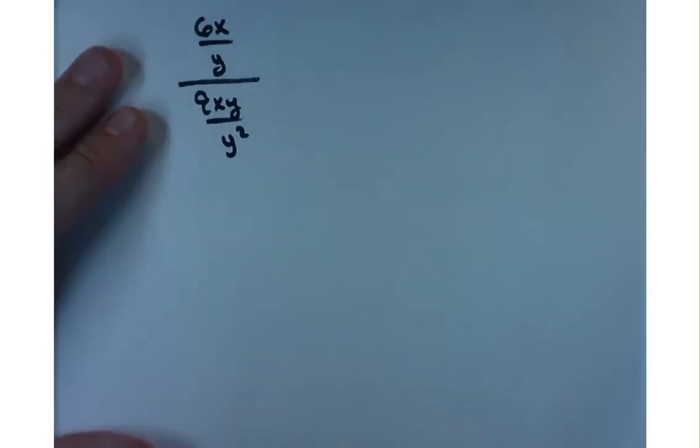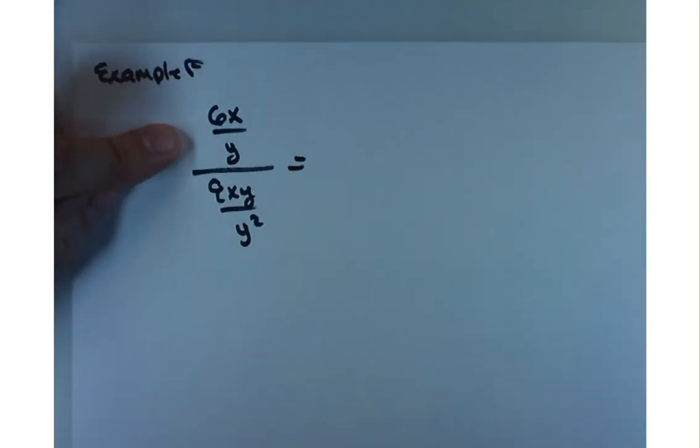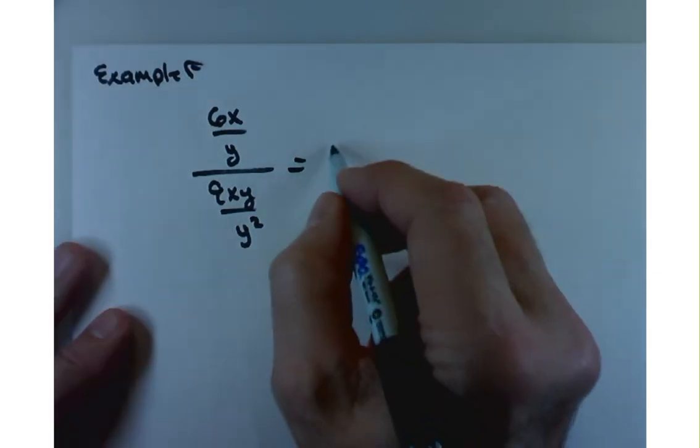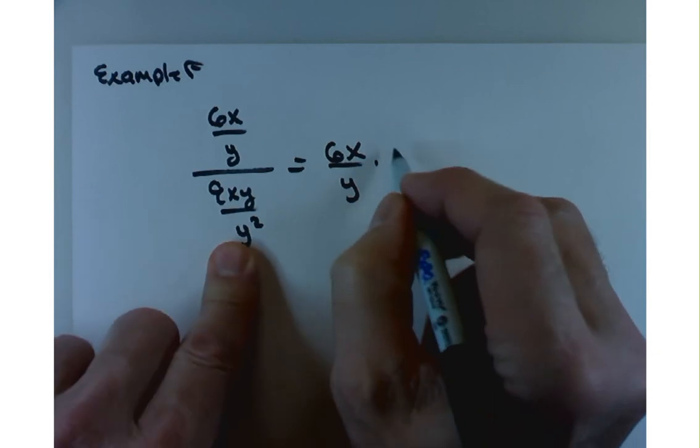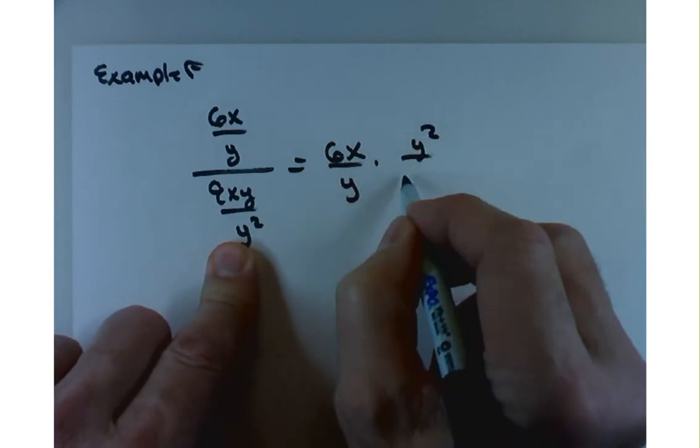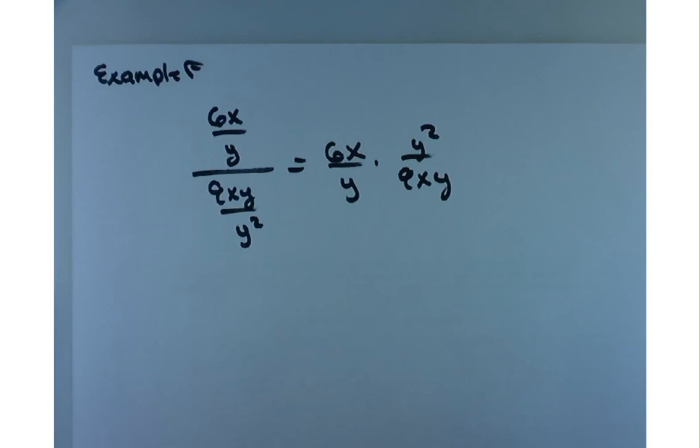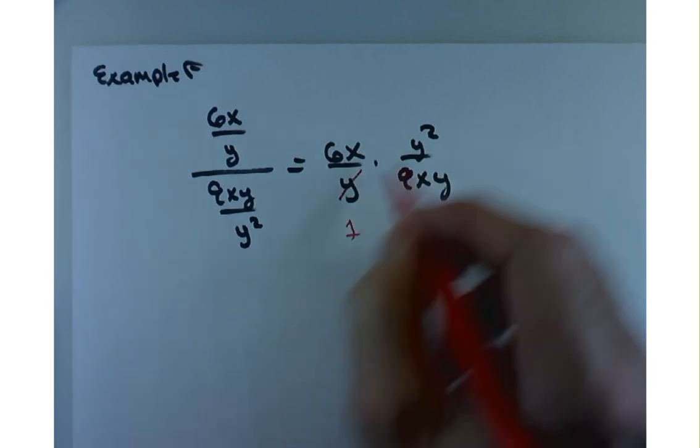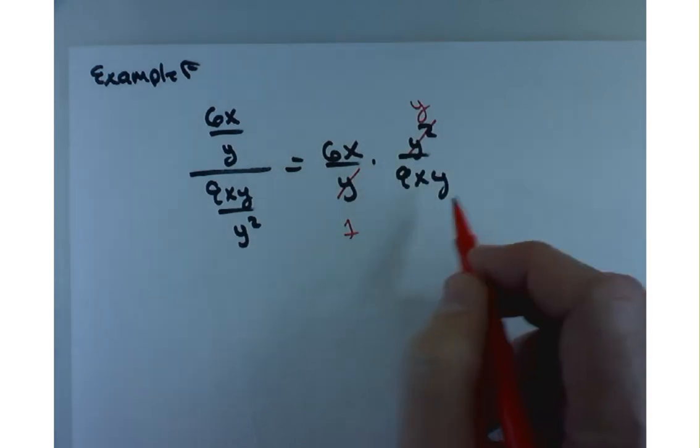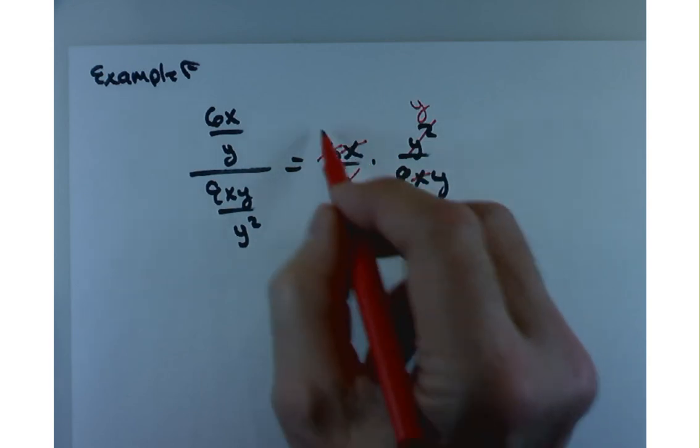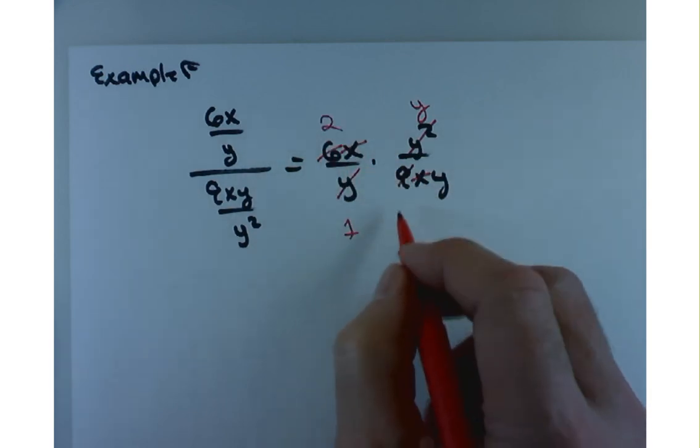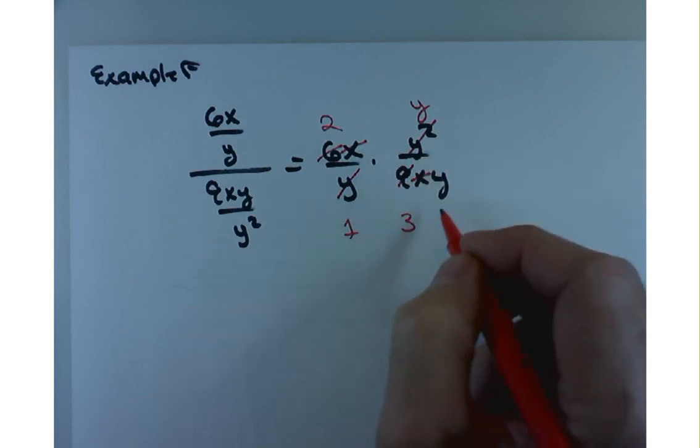So, last one. Kind of our lightning round. Some bonus problems. When you divide by a fraction, what's the trick? Multiply by the reciprocal. So, it's 6X over Y times the reciprocal of this, which puts your Y squared up here. What I would do is just kind of cancel everything. Y goes into Y once. It's going to leave a Y up here. The X's cancel. 3 goes into 6 twice. And 3 goes into 9 three times. And I'm still left with a Y here.